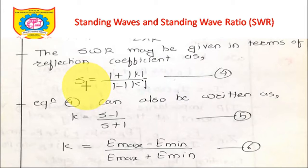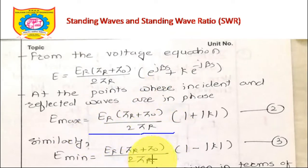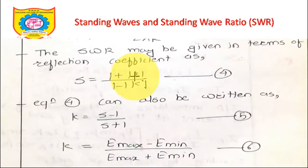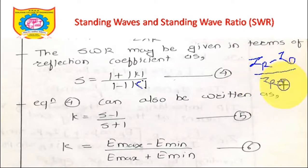Standing wave ratio can be expressed in terms of reflection coefficient. Dividing Emax by Emin, the ER, ZR, and Z0 terms cancel, leaving SWR = (1 + |K|)/(1 − |K|). The reflection coefficient K is defined as K = (ZR − Z0)/(ZR + Z0).